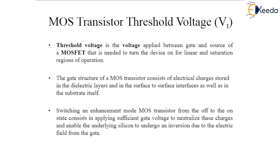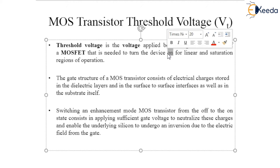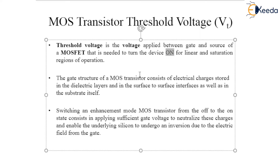As I said in the previous class, when VGS — that is, the gate to source voltage — is greater than the Threshold Point, then it starts to conduct. Threshold Voltage is the voltage applied between gate and source of a MOSFET that is needed to turn the device ON, for both linear and saturation regions of operation.